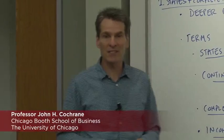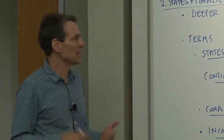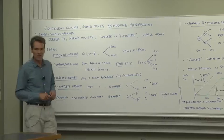Contingent claims, state prices, risk neutral probabilities. We're going to take a deeper look at discount factors, our basic pricing ideas, and connect them to some other ideas that are very useful. States and complete markets - there's a lot of different words here and we've got to learn what these words and ideas mean.